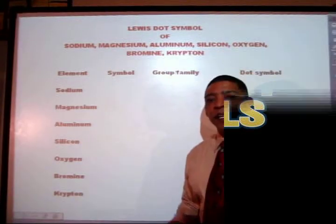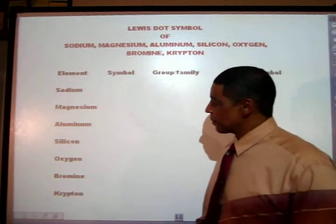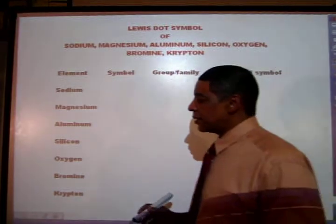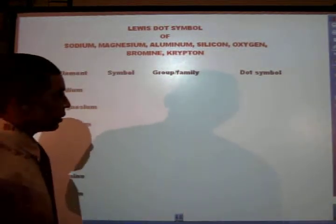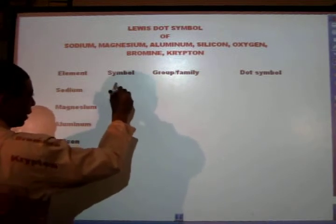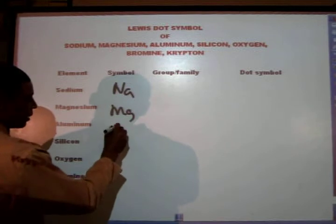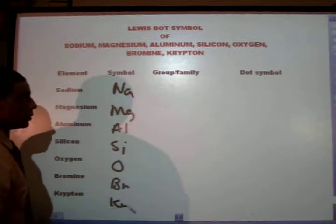Now let's practice writing a few Lewis dot symbols. The symbol for sodium is Na. The symbol for magnesium is Mg. Aluminum is Al. Silicon is Si. Oxygen is O. Bromine is Br. And krypton will be Kr.